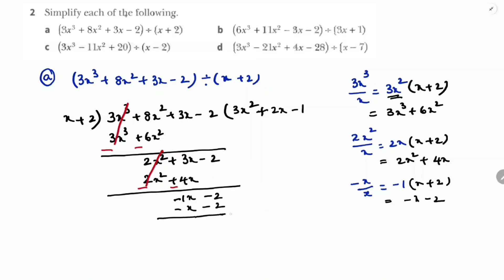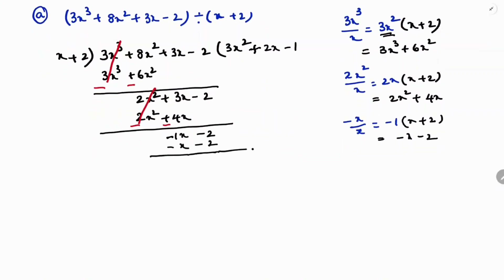Now subtract: both terms will become positive and cancel out completely, so the remainder is 0. The answer for this first problem — the quotient — is 3x² + 2x - 1.